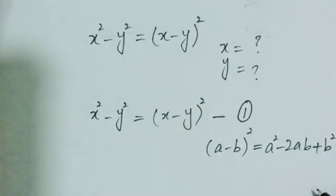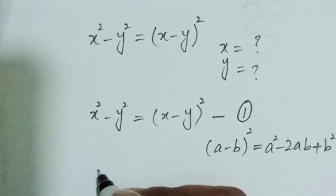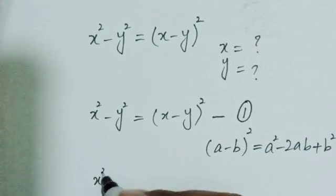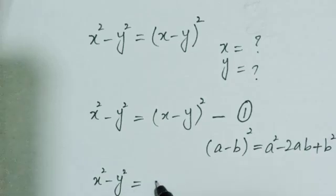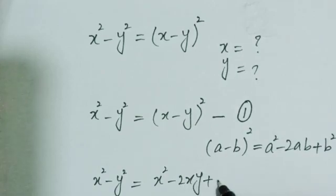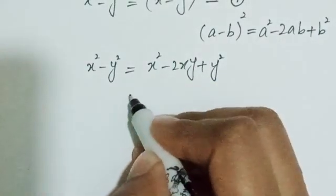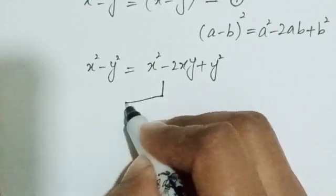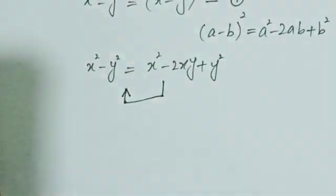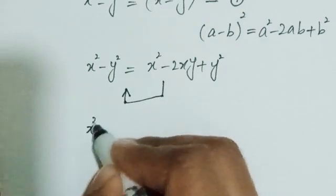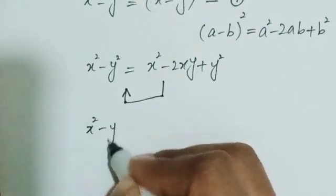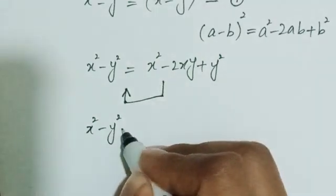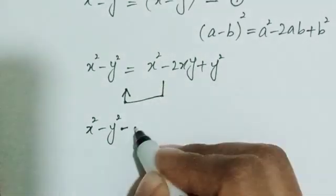I'm going to use this identity in this equation: x squared minus y squared equals x squared minus 2xy plus y squared. Next, I'm going to shift everything to the left-hand side.